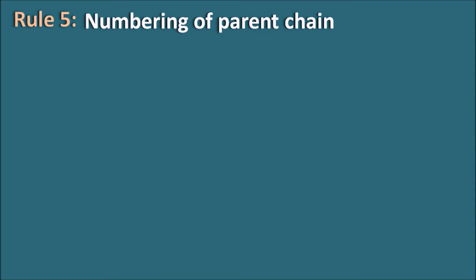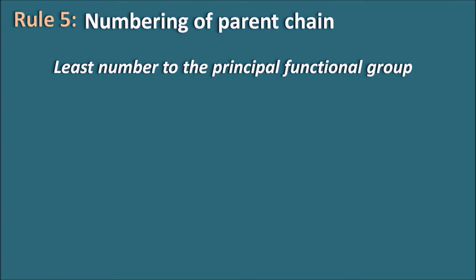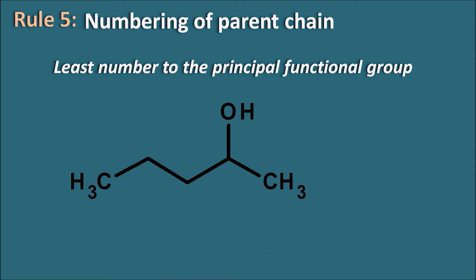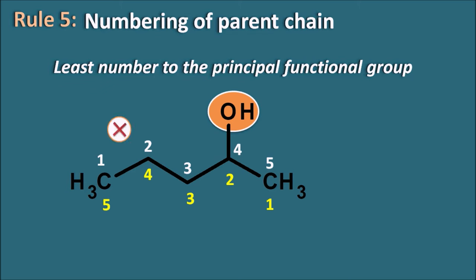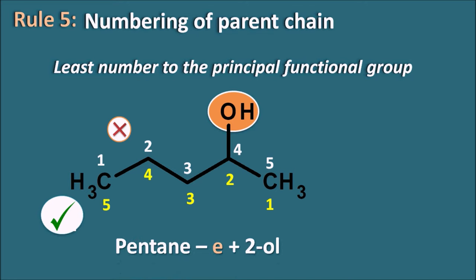Rule 5: numbering of the parent chain. Once the parent chain and root name are selected, numbering should give the least number to the principal functional group. Example: OH is the principal functional group. Numbering one direction places OH at position 4; the other direction places OH at position 2. Since the principal functional group gets the least number, the second direction is correct — giving pentane-2-ol or simply 2-pentanol.